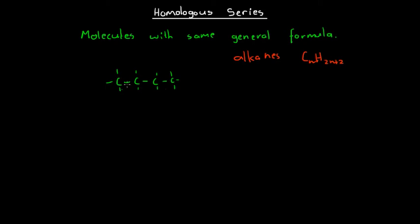The reason that is so is because every carbon has two hydrogens coming off it, which is where the 2n comes from. And then the two end carbons each have a third hydrogen coming off them, giving our plus 2. It's in fact the same general formula for branched alkanes as well, so alkanes always have the general molecular formula of CnH2n+2.